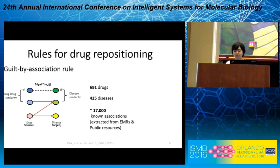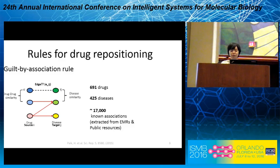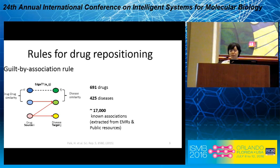The graph on the right side gives a visual understanding. There is a query pair of drug and disease, and we ask whether there is a true edge. First, we find a similar drug for the query drug, and also find a similar disease for the query disease. Then we check whether the similar drug and disease have a true edge. If yes, we draw an edge between the query drug and disease, because a similar pair has a true edge — that is the guilt-by-association rule. In our dataset, we have 691 drugs and 425 diseases, with over 70,000 edges extracted from EMRs and public resources.